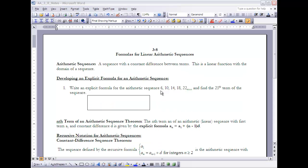So let's take a look at Example 1, which is going to help us in developing an explicit formula for arithmetic sequences. It says, write an explicit formula for the arithmetic sequence 6, 10, 14, 18, 22, and find the 25th term of that sequence. If my first term is 6, and I have a constant difference between each of these terms of 4, that constant difference represents the slope of our line.